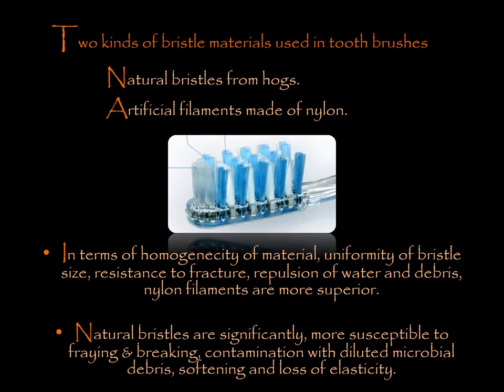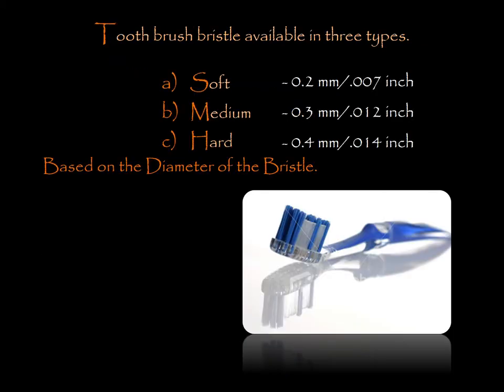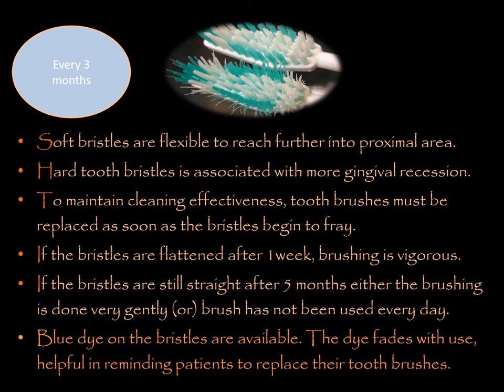Different types of bristle materials are available: natural bristles and artificial filaments. Nylon filaments are more superior in terms of uniformity of bristle size, resistance to fracture, and repulsion of water and debris. Natural bristles are more susceptible to fraying, breaking, contamination with microbial debris, softening, and loss of elasticity. Toothbrushes are also classified according to the diameter of the bristle as soft, medium, and hard. Soft bristles are flexible and can reach further into the proximal area. Hard bristles are associated with more gingival recession.